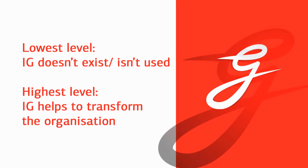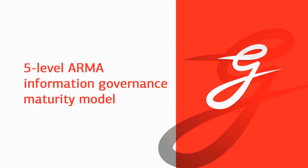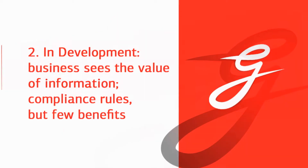We're going to use an example of the ARMA information governance maturity model. It has five levels. The first level is called Under Standardized. On that level, the organization is using information and treating it as a side product of their daily business activities. No standardization is done, or if it is, it is on an ad hoc basis and in a very limited area.